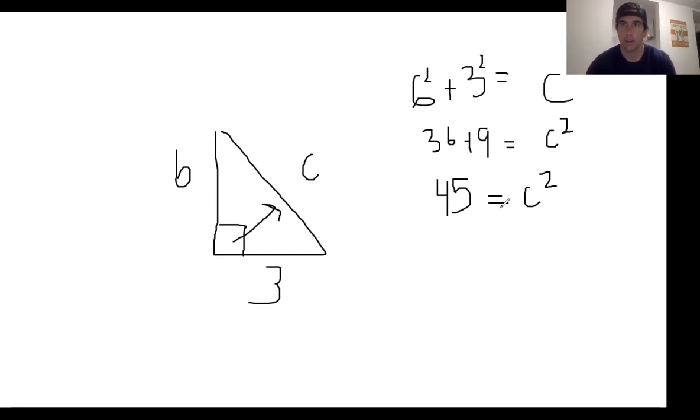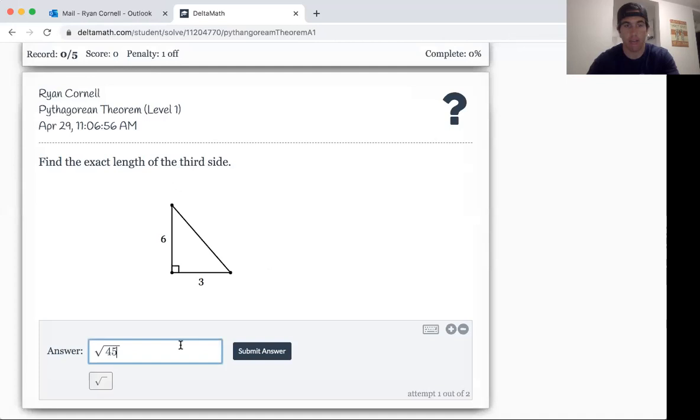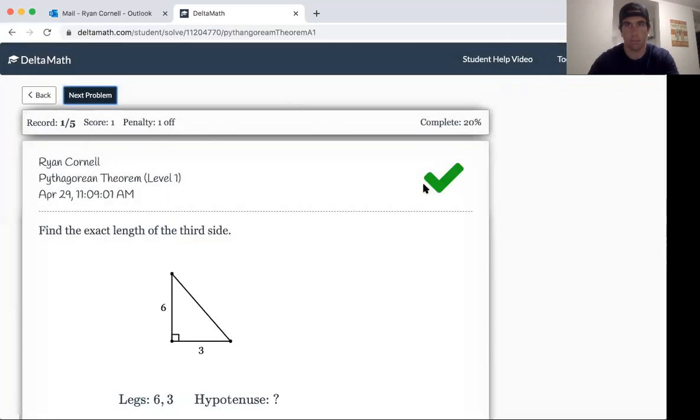Now, how do you get rid of a squared? Guys, remember the last step of the Pythagorean theorem is take the square root. So my answer is the square root of 45. Now when I go back to here, I know my answer is the square root of 45. Now find the exact length of the third side. So when I put in the square root of 45, let's see what happens. Bam! That's the exact length of the third side, is the square root of 45. That's it.